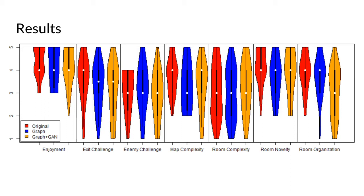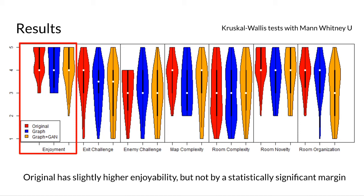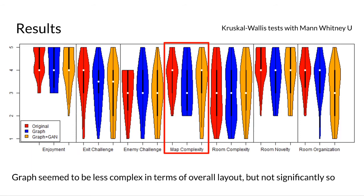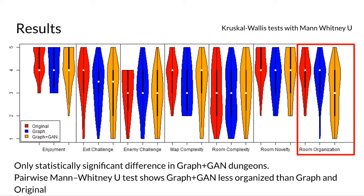Participants were asked to rank dungeons on a scale of 1 to 5 in multiple categories such as enjoyment, exit challenge, enemy challenge, and so on. In terms of enjoyment, the original has slightly higher enjoyability but not by a statistically significant margin. In terms of map complexity, the graph dungeons seem to be less complex in overall layout but not significantly so. In terms of room organization, the only significant differences are in graphGAN dungeons — a pairwise Mann-Whitney U test shows graphGAN dungeons are less organized than graph and original dungeons.